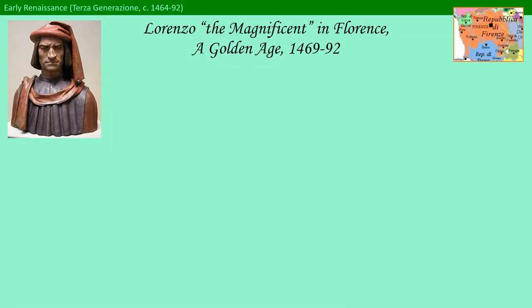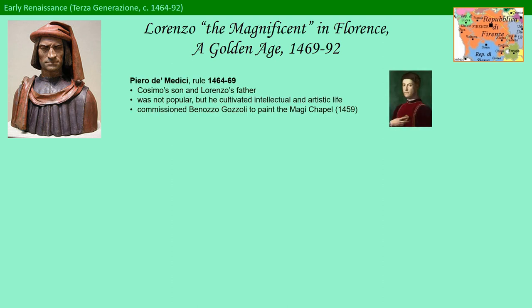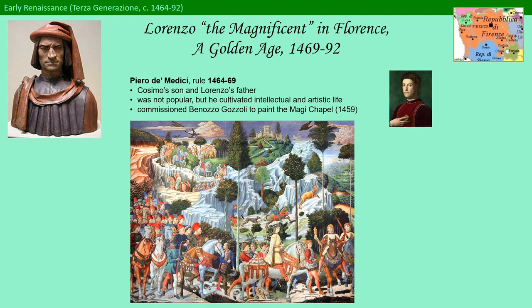Florence had a somewhat turbulent but fascinating history during this time. Primarily, it was a golden age under the rule of Lorenzo de' Medici, called the Magnificent, from 1469 to 1492. His rule was preceded by the brief rule of his father, Piero de' Medici, following the death of the great Cosimo, from 1464 to 1469. Piero was not particularly popular, but as a true Medici of his time, he cultivated the intellectual and artistic life of the city. He was the one who commissioned Benozzo Gozzoli to paint the Magi Chapel, which we viewed in the last lecture.